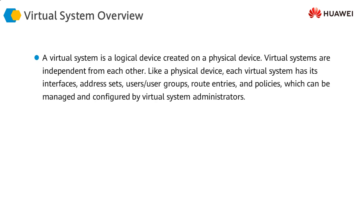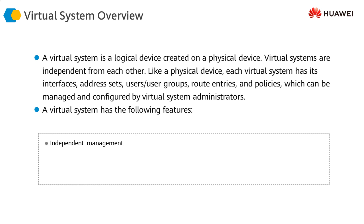First, the overview of virtual systems. A virtual firewall system is a logical device created on a physical device. The benefits include independent management for each virtual firewall partitioned from the physical firewall. All of them will have independent entity entries — that is, routing table entries, session entries, and policies — they will all be separate from each other, with dedicated resources and isolated traffic between those firewalls.